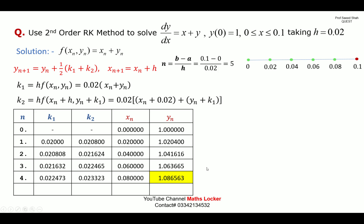For the fifth and final iteration (x_n = 0.08): substituting x_n = 0.08 and y_n = 1.086563 gives k₁ = 0.023431. Substituting x_n = 0.08, h = 0.02 (so x_n + h = 0.10), y_n = 1.086563, and k₁ into the formula gives k₂. Substituting all values into the RK formula gives y₅ = 1.11327.